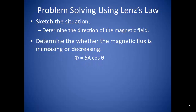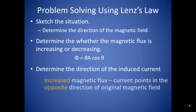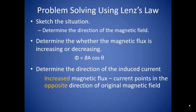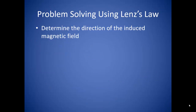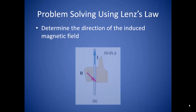Then determine whether the magnetic flux is increasing or decreasing by using the magnetic flux equation. This is really important because it tells you the direction of the induced electric current. If the magnetic flux increases, the induced current will point in the direction opposite to the original magnetic field. If the magnetic flux decreases, the induced current will point in the same direction as the original magnetic field. Now that we know the direction of the induced electric current, we can use the right-hand rule to determine the direction of the induced magnetic field. Point your thumb in the direction of the current and wrap your hand around the wire — your fingers point in the direction of the induced magnetic field.